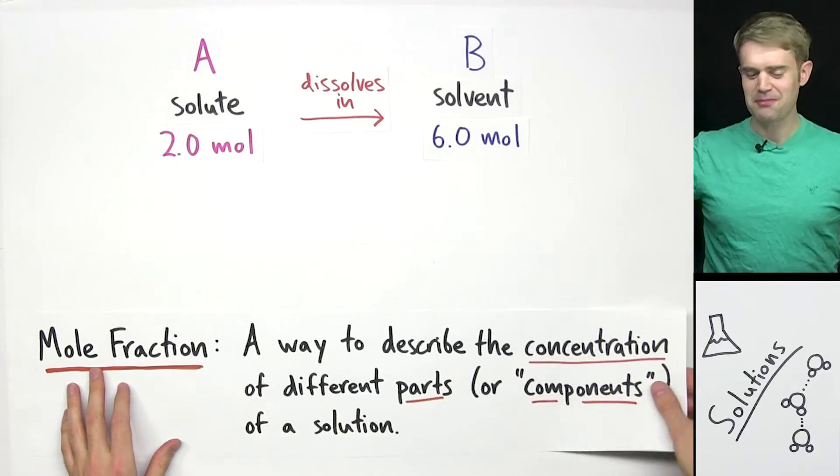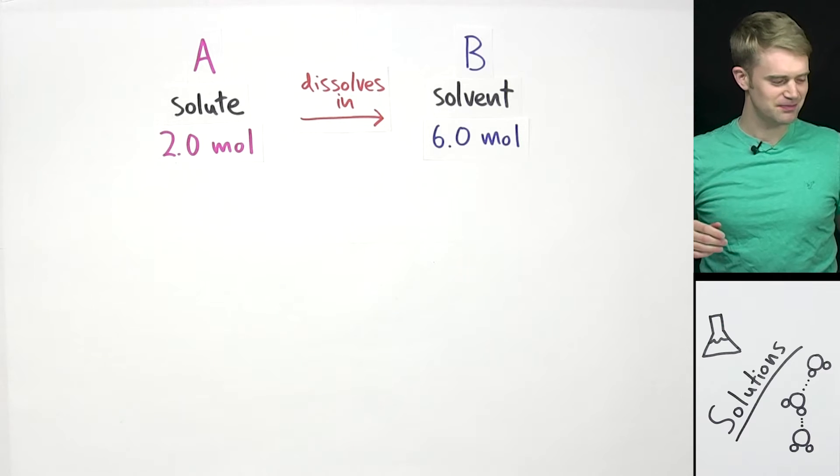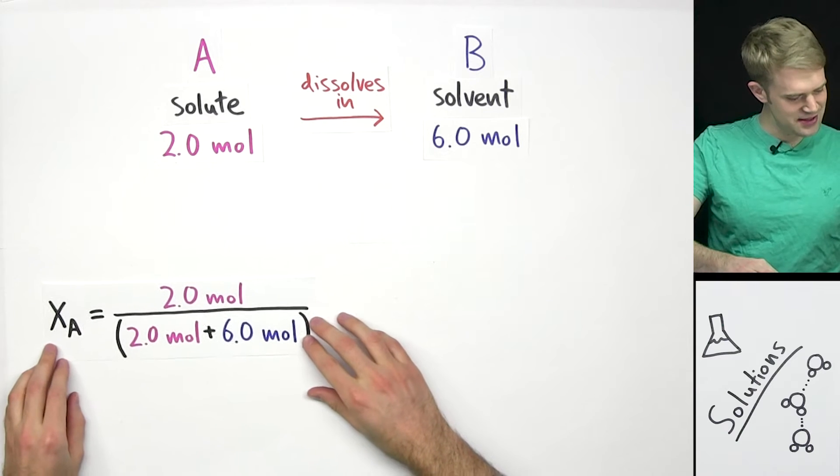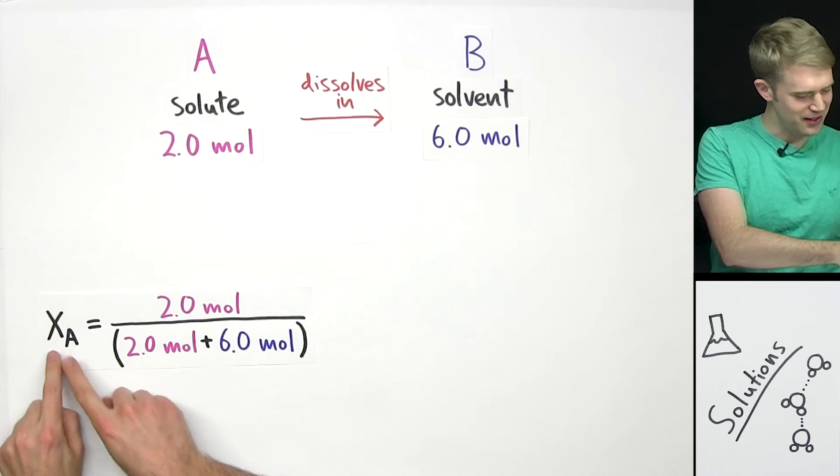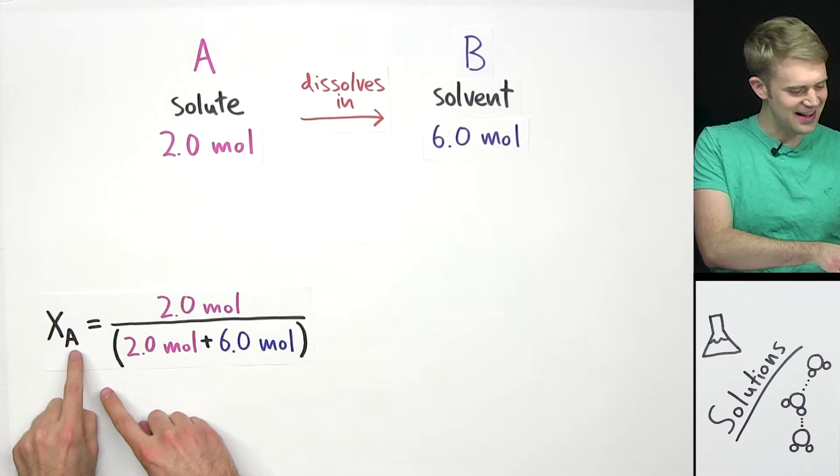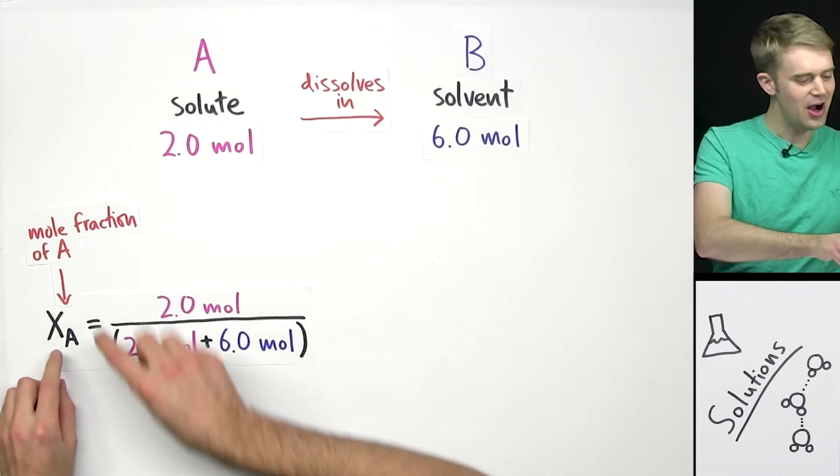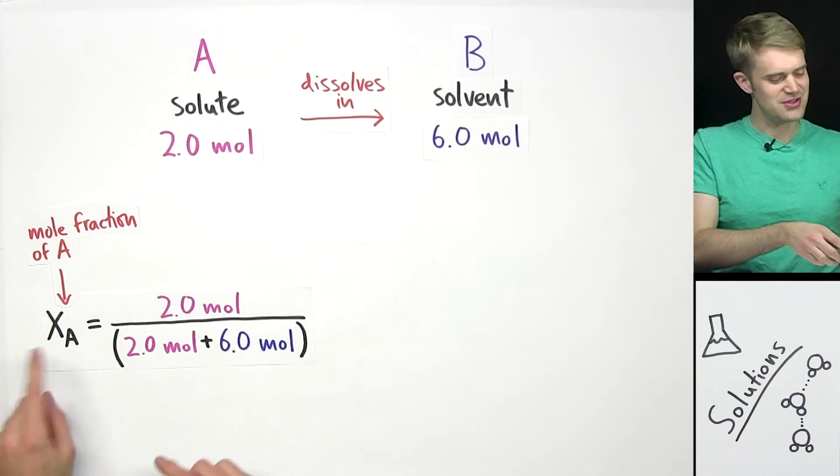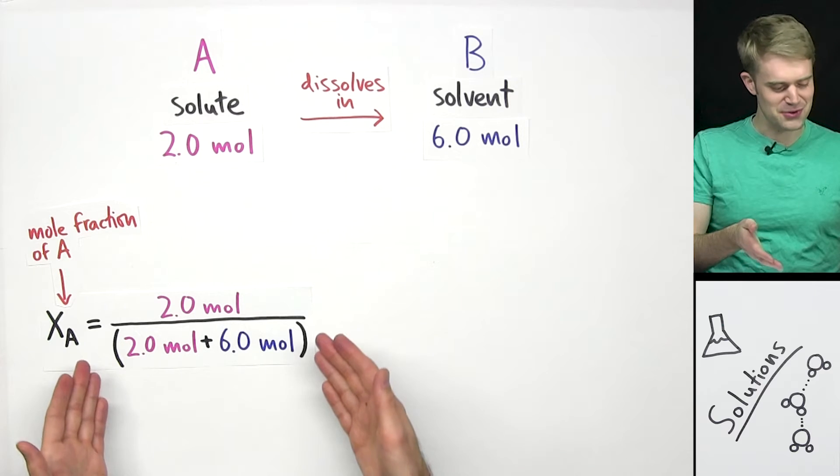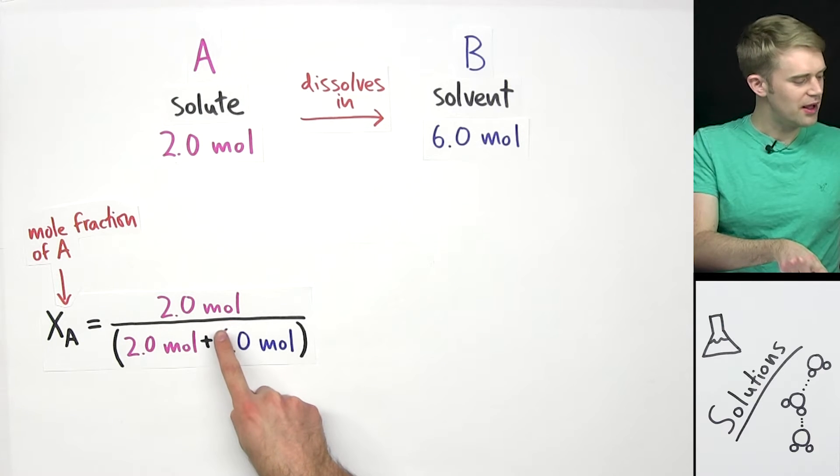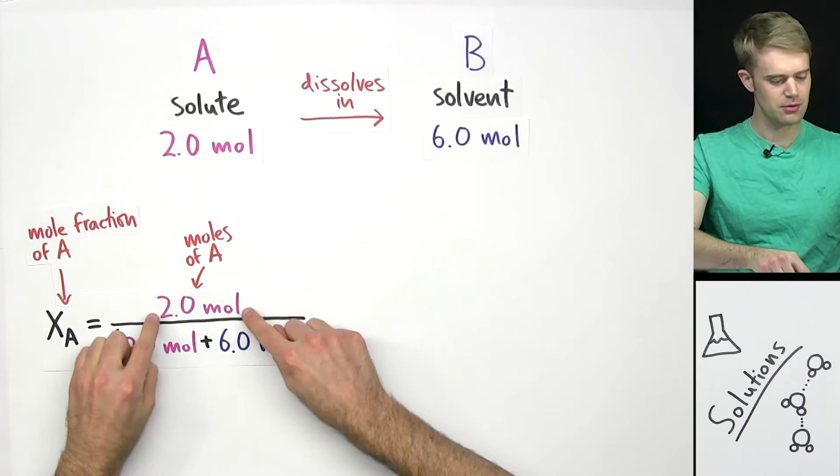Let's start out by calculating the mole fraction for the solute, for chemical A. Here is the equation for the mole fraction of chemical A. This symbol here, the X with the A down here, is a symbol for mole fraction of A. You can pronounce this as X sub A. Now, let's take a look at the numbers here. On the top of the fraction, we have the number of moles of A, 2.0 moles.